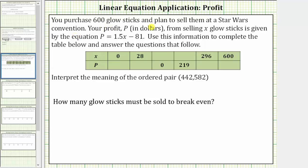You purchase 600 glow sticks and plan to sell them at a Star Wars convention. Your profit P in dollars from selling X glow sticks is given by the equation P equals 1.5X minus 81. Use this information to complete the table below and answer the questions that follow.